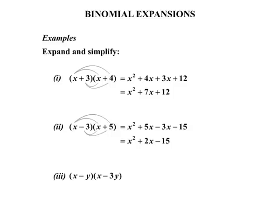Our third and final example here. x minus y multiplied by x minus 3y. So we start with that first term and loop up with the two terms in the other bracket. Then moving on to the minus y, draw our little loops.